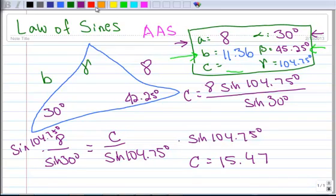So C then is 15.47. So there's an example of using the law of sines to solve a non-right triangle.